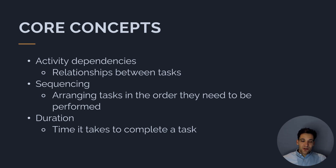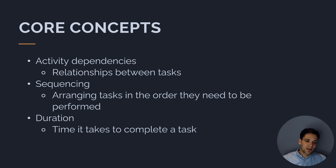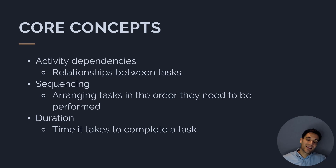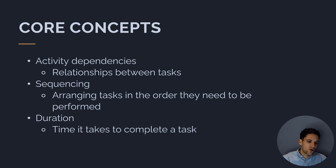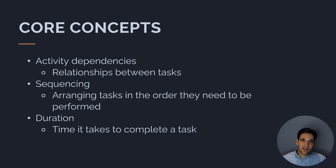We understand that a project can be broken down into a series of activities that need to be completed to finish the work. Activities have certain attributes, including dependencies — relationships between activities. For example, to start the concrete foundations, we need the earthworks to be complete. So the earthworks activity and the concrete foundations activity have a relationship; the concrete foundations are dependent on the earthworks being complete. These activities and their dependencies form a sequence — the order in which we need to complete the activities to complete the project.